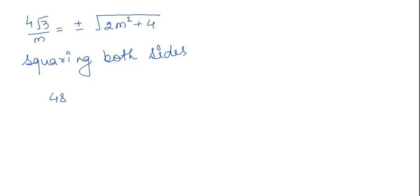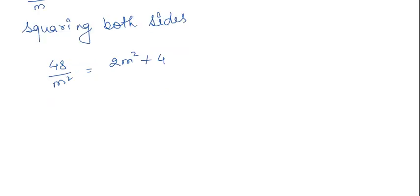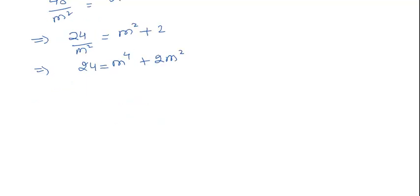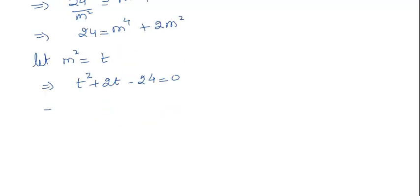Squaring both sides: (4√3/m)² = 2m² + 4, which gives 48/m² = 2m² + 4. Multiplying through by m² and simplifying: 48 = 2m⁴ + 4m², which reduces to m⁴ + 2m² = 24. Substituting t = m², this becomes t² + 2t − 24 = 0.